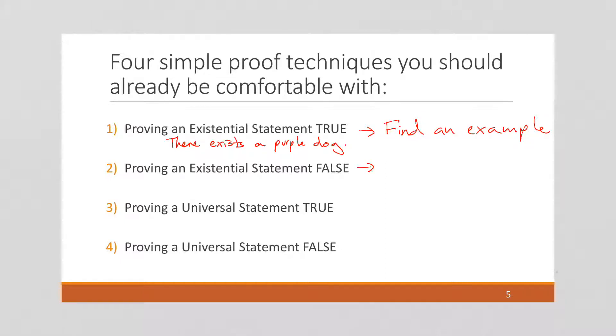Which would be difficult with dogs, but with numbers if you have a finite domain you can do a proof by exhaustion by looking through every element in the domain and showing that the existential statement does not work for it.